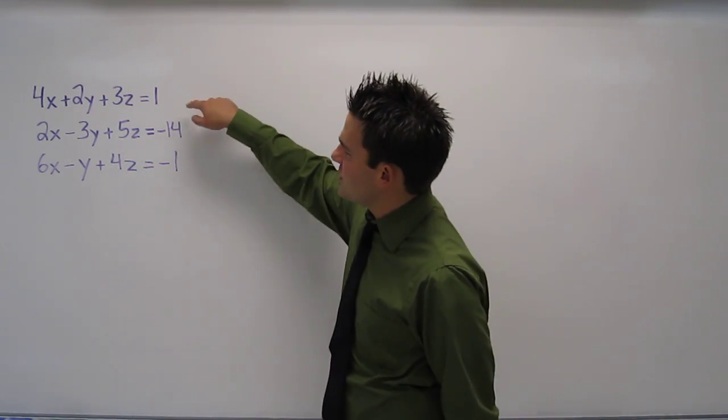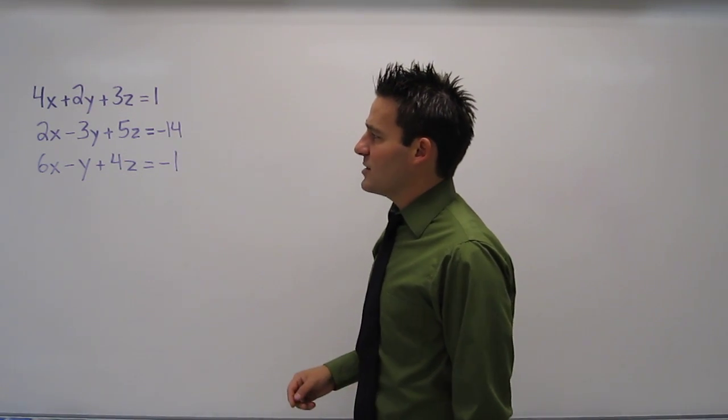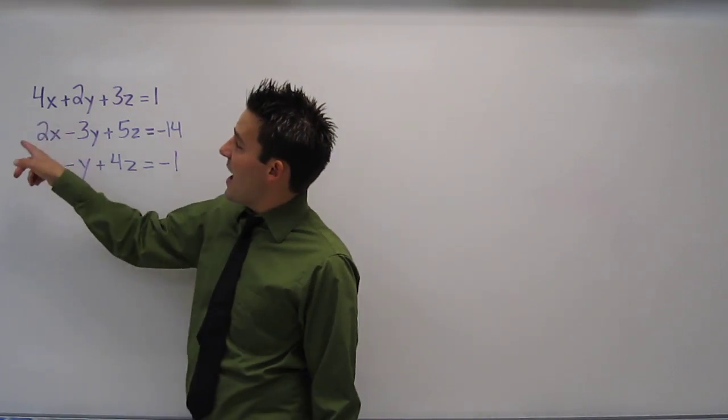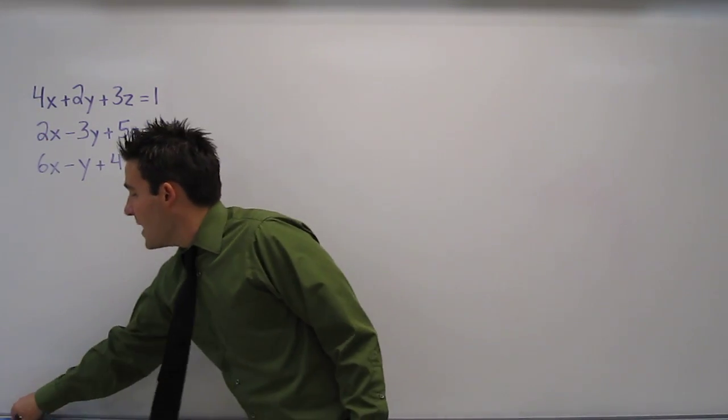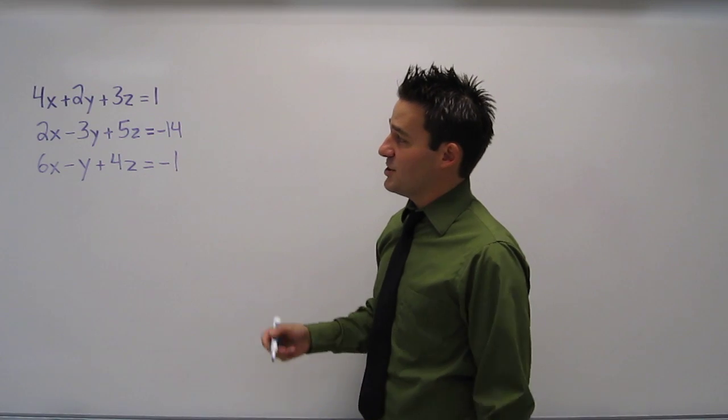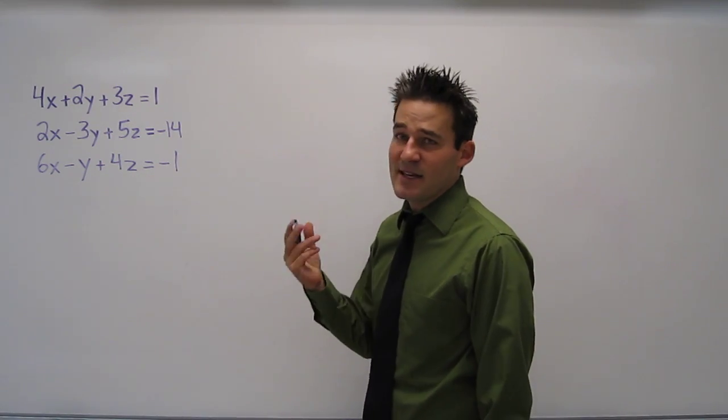So let's look at the first two equations. I notice that the coefficients of x are 4 and 2. If I multiply the second equation by negative 2, let's see what happens.